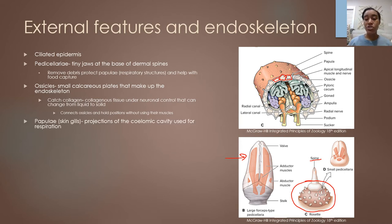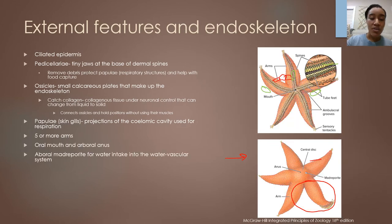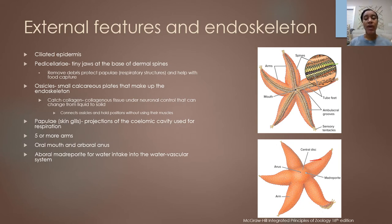Echinoderms also have projections called papula or papulae through their dermal layer — thin projections of the coelomic cavity that extend past the ossicles out of the body, responsible for aiding in respiration. Starfish have five arms and a pentaradial structure, so even echinoderms without five arms still have that core five-projection pattern, which we'll see when we discuss sea urchins and other classes.